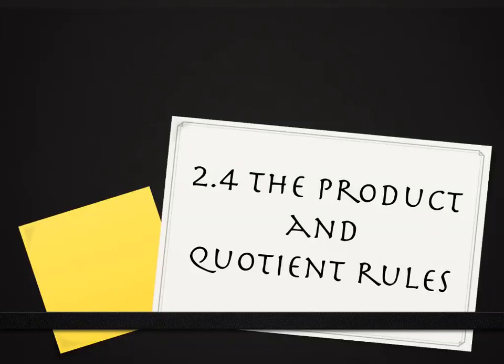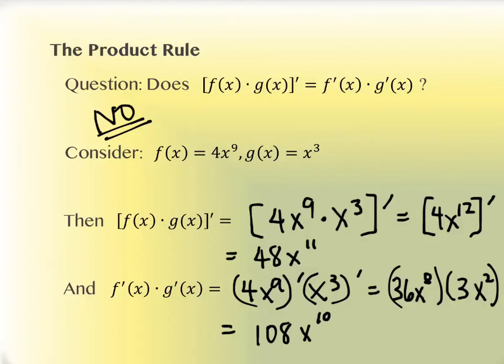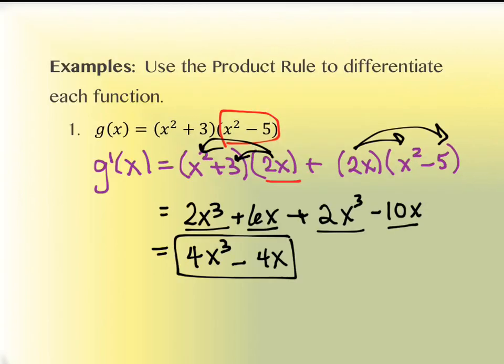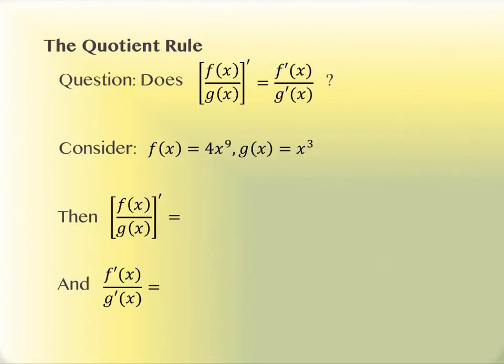Last time we left off in the middle of section 2.4, which is the product and quotient rules. We had talked about the fact that when we have a product, we can't take the derivative of each of those pieces and multiply them together. Instead, we had the product rule: take one piece as originally written, multiply it by the derivative of the other piece, then add that to the reverse order. We did a couple of examples using that, and we left off talking next about the quotient rule.